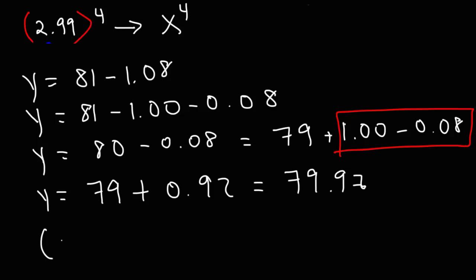So we could say that 2.99 raised to the fourth power is, we're going to round this to the nearest tenth. So this is approximately 79.9.